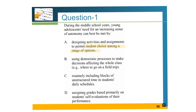Answer B could be using democratic processes to make decisions affecting the whole class, like where to go on a field trip. Answer C is routinely including blocks of unstructured time in students' daily schedules, which has nothing to do with the question. Answer D — assigning grades based primarily on students' self-evaluations of their performance — also seems like a good answer, but we can't use self-evaluation as grades against students. So the correct answer is A.